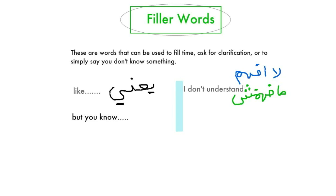Another useful expression — which I like — is using 'but, you know' when you don't remember a word in a sentence. We use it in English too: 'you know.' In Arabic, you would say, 'bas ta'arif.' For example, if you want to say, 'The class was easy, but, you know, there was a lot of work,' you say, 'Assaf kan sahel, bas ta'arif kan fi shughal k'teer.'